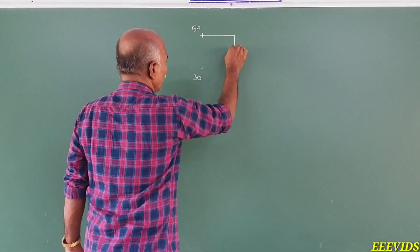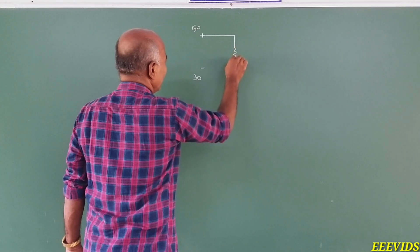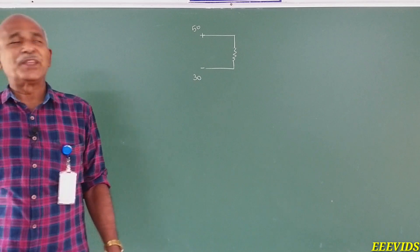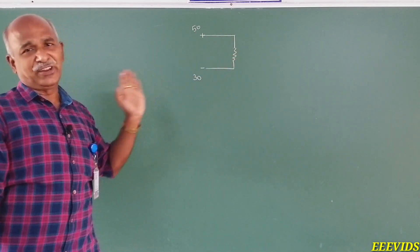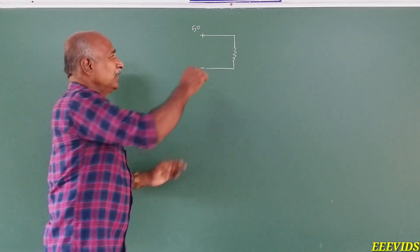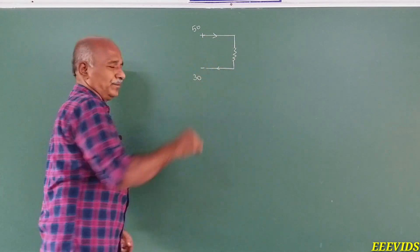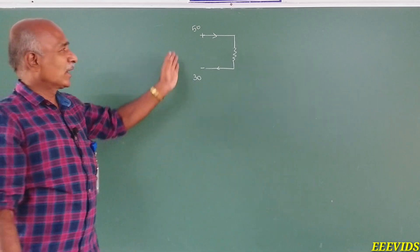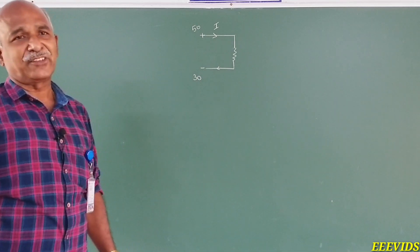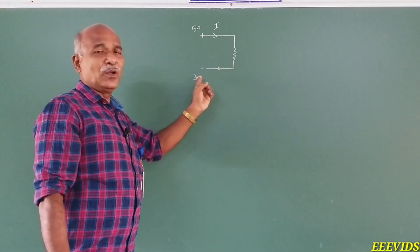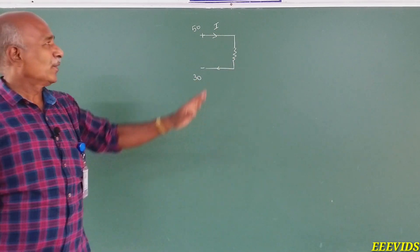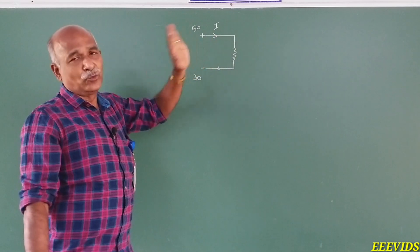Using a wire, we can create a path. Now the electrons are moving from high potential to low potential. What is moving through this wire? The electrons are moving. So this is the current direction — the electrons are moving, and this defines the current direction.